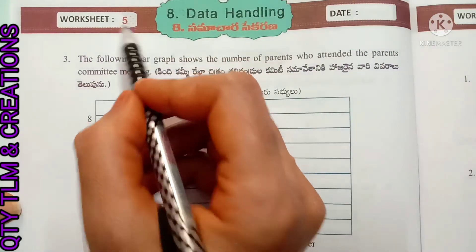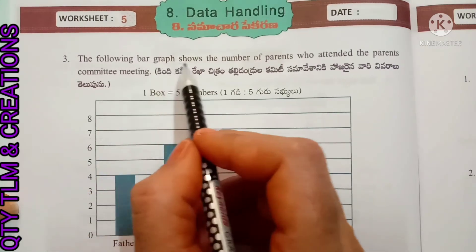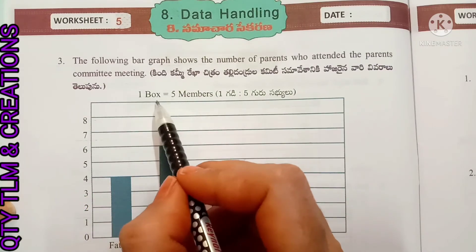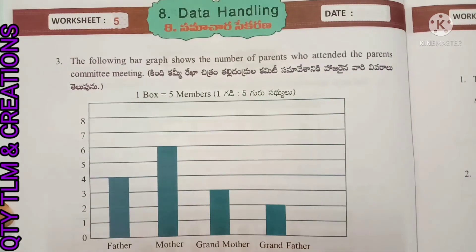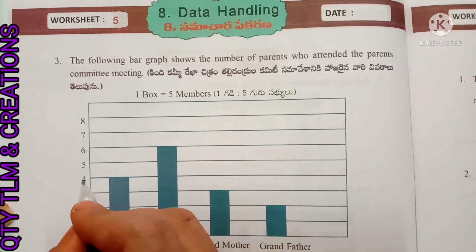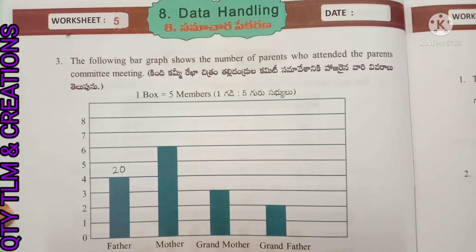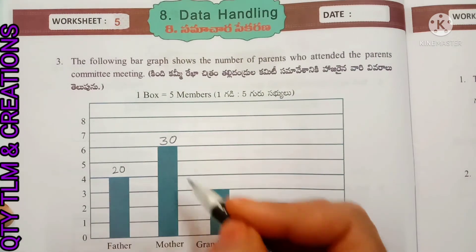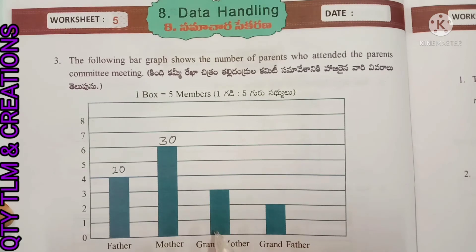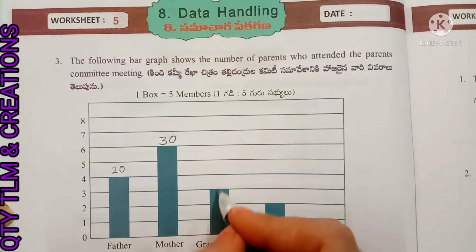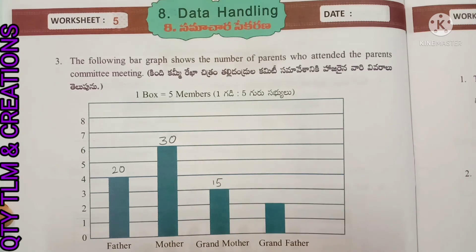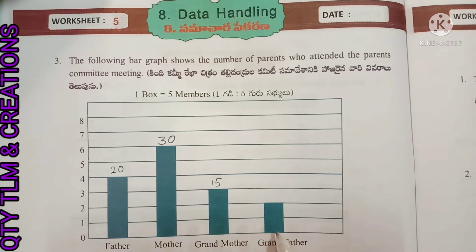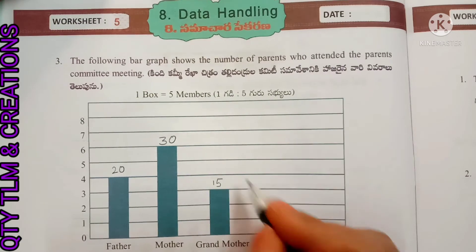Next, worksheet number 5, question number 3. The following bar graph shows the number of parents who attended the parents committee meeting. One box equals 5 members. Fathers: 4 boxes, so 4 fives are 20 fathers attended. Mothers: 6 boxes, so 6 fives are 30 mothers attended. Grandmothers: 3 boxes, so 3 fives are 15 grandmothers attended.